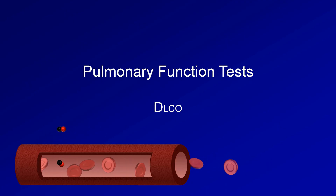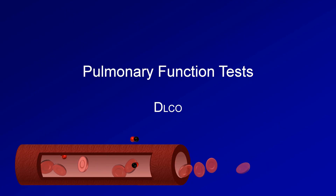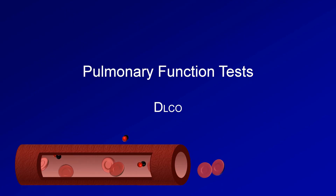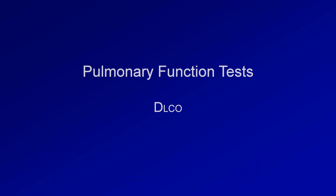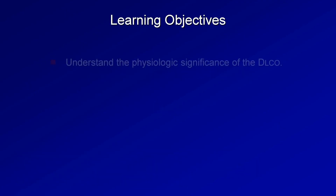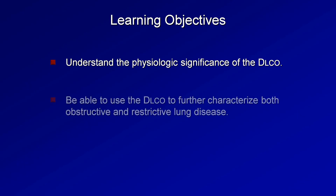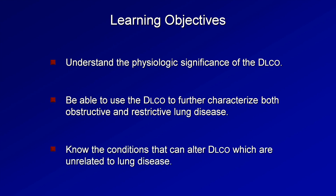This is the fourth video in this series on pulmonary function tests, and today's topic is the diffusing capacity of carbon monoxide, abbreviated DLCO. The learning objectives are to understand the physiologic significance of the DLCO, to be able to use the DLCO to further characterize both obstructive and restrictive lung disease, and to know the conditions that can alter the DLCO which are unrelated to lung disease.